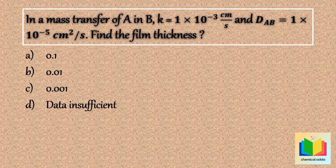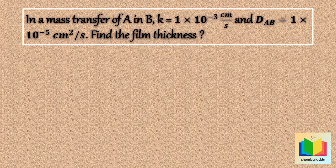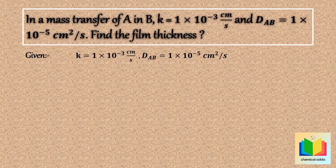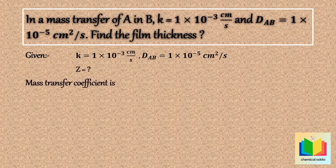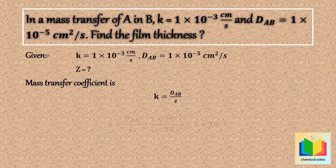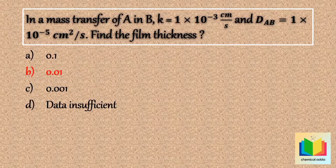The answer is option B: 0.01. Given k = 1 × 10⁻³ cm/s and Dab = 1 × 10⁻⁵ cm²/s, we need to find film thickness z. Using the formula k = Dab / z, we rearrange to z = Dab / k. Substituting values: z = (1 × 10⁻⁵) / (1 × 10⁻³) = 0.01 centimeters. Answer: option B, 0.01.